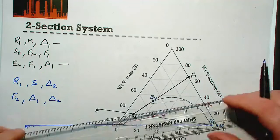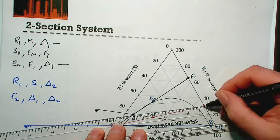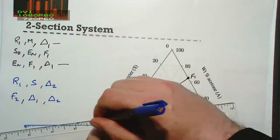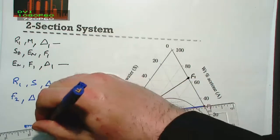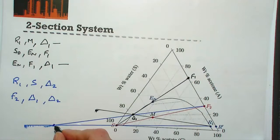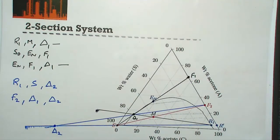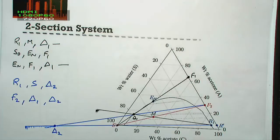Going back to our ternary diagram to plot our second operating point: R1, S, and δ2 are collinear, so δ2 must lie somewhere on that line. The other set is that F2, δ1, and δ2 are also collinear. So if we find F2 and δ1 and extend that line, where it meets the line through R1 and S gives us the operating point for the top of our column.